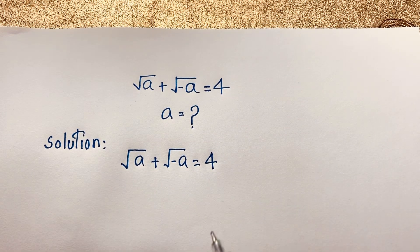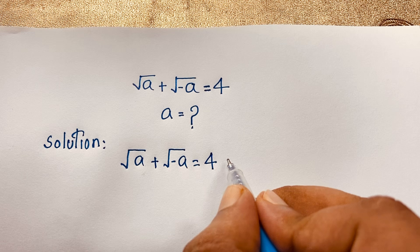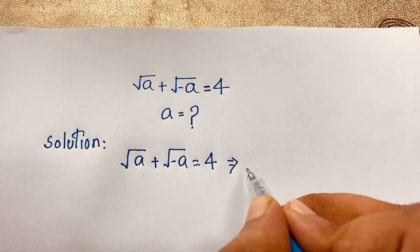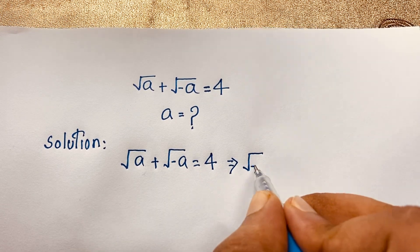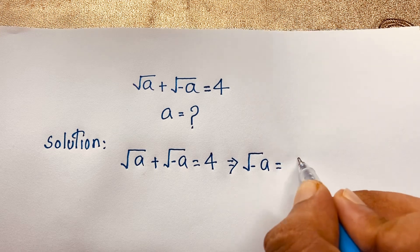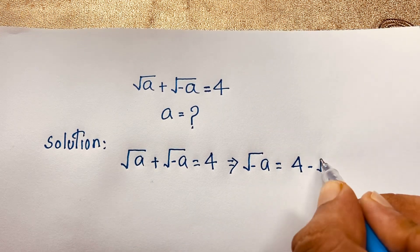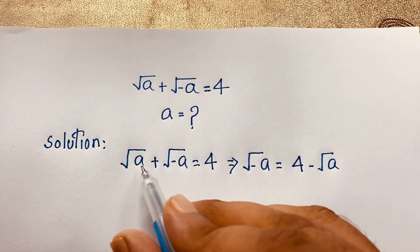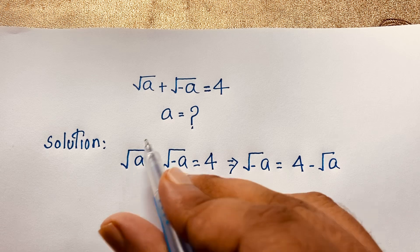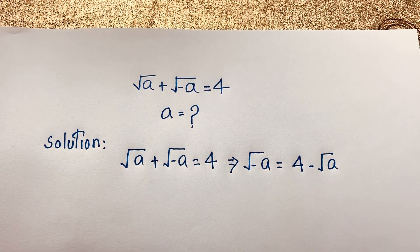Now, at this moment, I can say this expression: square root minus A is equal to 4 minus square root A. I just move this positive square root A to the other side, so it becomes negative square root A.